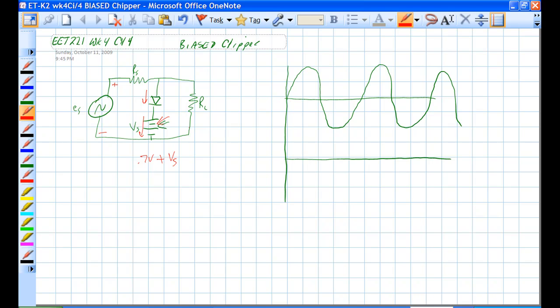So this waveform goes up to plus .7 volts here, and VS, this. Okay, plus .7 volts plus VS, right there, and this one goes down to V peak.